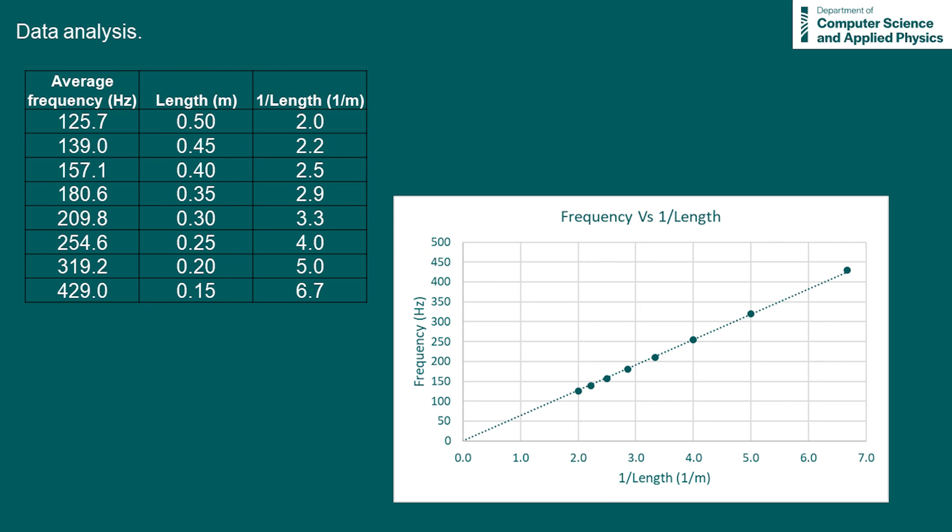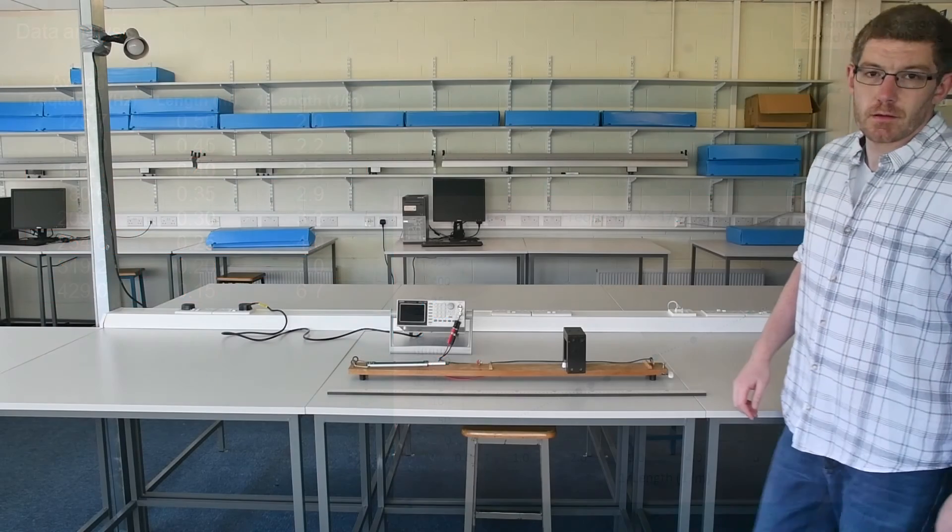If we apply a line at best fit, we get a straight line that passes through the origin. So our straight line graph has verified that frequency is proportional to one over length.